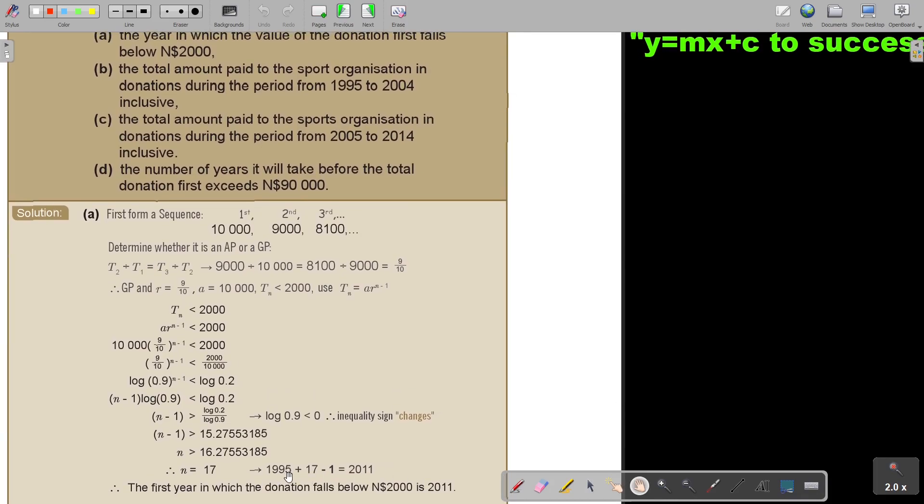So N is bigger, so it's 17. The first year in which the donation falls below is 2,000 and 11. So because it's 1995 plus 17, but then don't forget inclusive 1995, so that's why I subtract 1, and that's 2011. If you have to count it on your fingers, just do it, but make sure that you don't make that mistake.